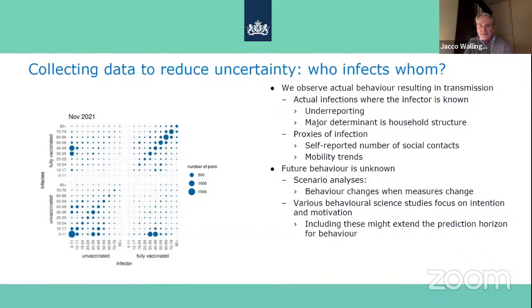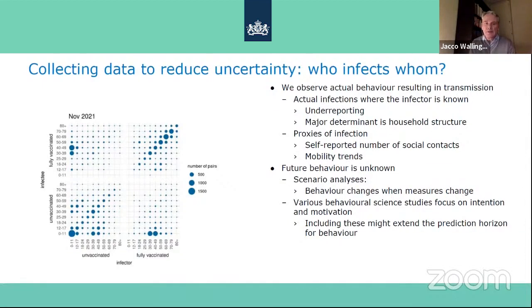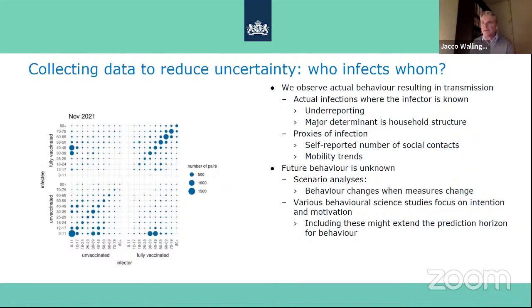We also check infection dynamics against proxies such as self-reported numbers of social contacts and mobility trends showing whether people leave home and go to work or school. It is very important to realize that all this data indicates past behavior, and future behavior is unknown. In scenario analysis we assume behavior changes when measures change, but over the longer term people also change for other reasons. There is a prediction horizon on each model because behavior over the longer term is not properly captured.